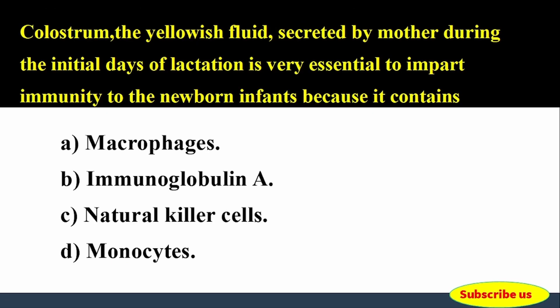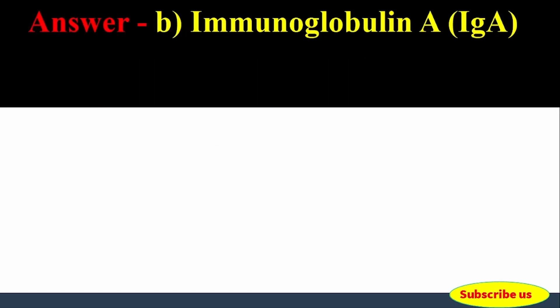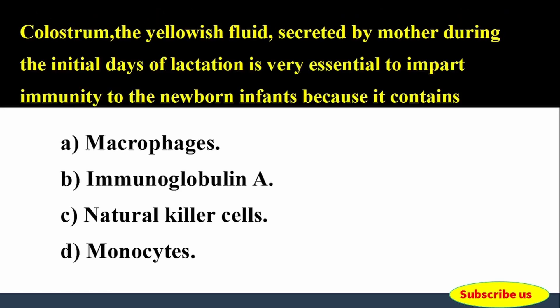Next question: The yellowish fluid (colostrum) secreted by a mother during the initial days of lactation is very essential to impart immunity to newborn infants because it contains — Options: A) Macrophages, B) Immunoglobulin A, C) Natural killer cells, D) Monocytes. Correct answer: Option B, Immunoglobulin A (IgA). Colostrum contains IgA, which imparts immunity to newborn infants.